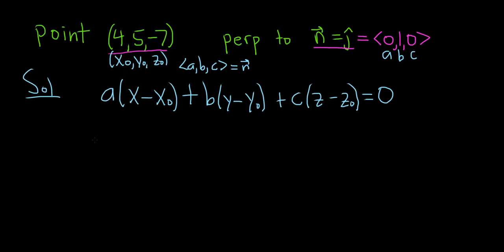Okay, now we just plug everything in. So let's do it. So it'll be 0(x - 4), because x₀ is 4,